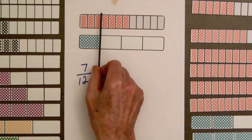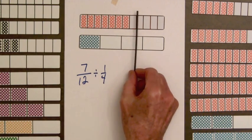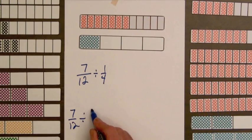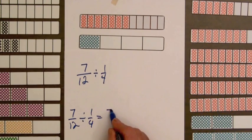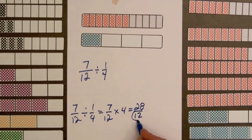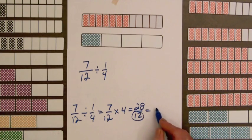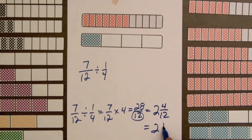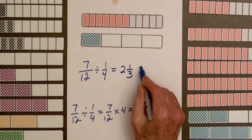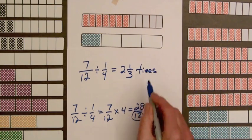Now we can see this amount — one-fourth fits in there once, twice; this would be three, so it's more than two and less than three. Let's compute this amount. Seven-twelfths divided by one-fourth is seven-twelfths times four. That's twenty-eight over twelve. Each part of a whole bar has twelve parts, so we're going to have two whole bars and four more parts, and so this equals two and one-third.